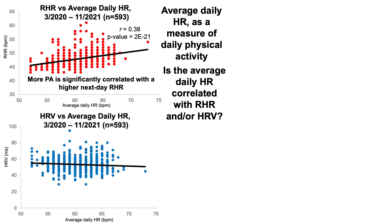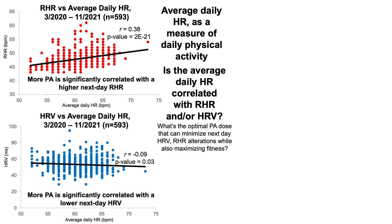Conversely, the more active I am — as indicated by the average daily heart rate — heart rate variability is significantly lower. This raises the interesting idea about the optimal physical activity dose that can minimize next-day variations in heart rate variability and resting heart rate while also maximizing fitness. That's beyond the scope of this video; I'll investigate it in my data first and then present it in a future video.